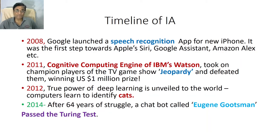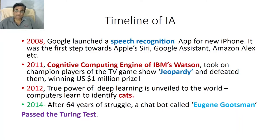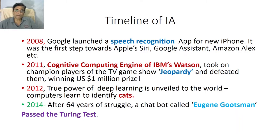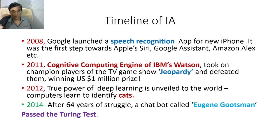Then again, in 2008, Google launched a speech recognition app for new iPhones, and it was the first step towards the development of Apple Siri, which all of us converse with. Then Google Assistant, Amazon Alexa — a bunch of intelligent agents came into existence due to speech recognition reaching an acceptable level. That happened in 2008.